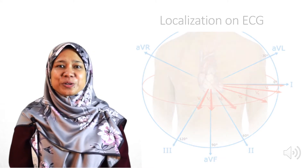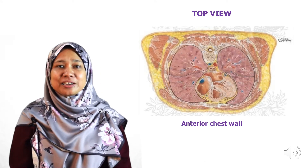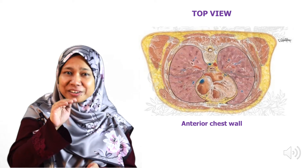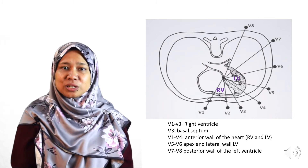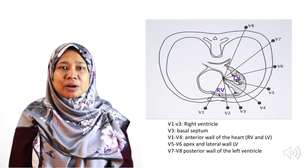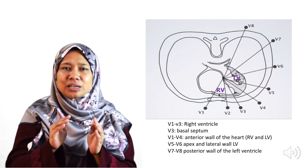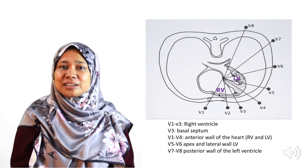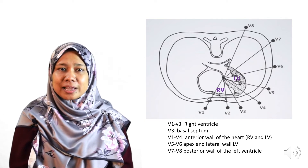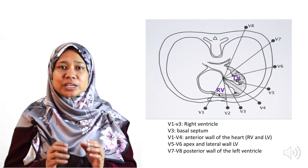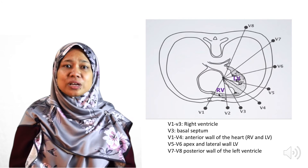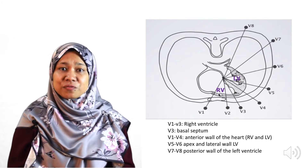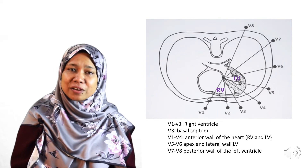Here is a diagram showing the transverse plane of the heart viewed from above (superior view). Leads V1 to V4 look at the anterior wall, including the right ventricle, the septum, and part of the left ventricle. Specifically, V1 and V2 look at the right ventricle and septum. V5 and V6 show the apex and lateral wall of the left ventricle. We also have posterior leads V7 and V8, which look at the posterior wall of the left ventricle.